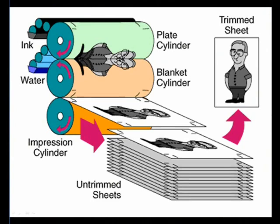The lithography process is comprised of a series of rollers and cylinders. One set of rollers brings a water-based solution to the plate, and another set brings an oil-based ink. The plate, which is wrapped around a cylinder, contacts the roller system. Water clings to the non-image areas of the plate, while the oily ink sticks to the image areas of the plate.